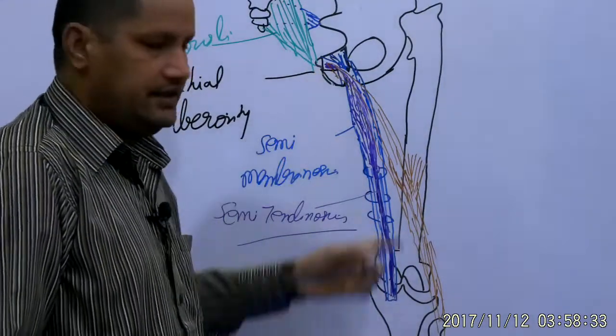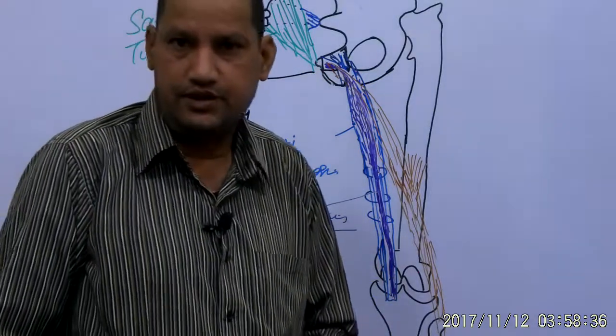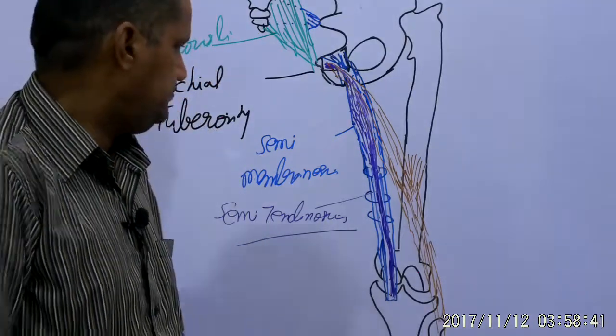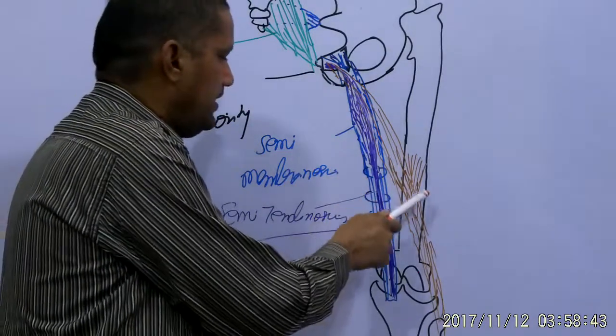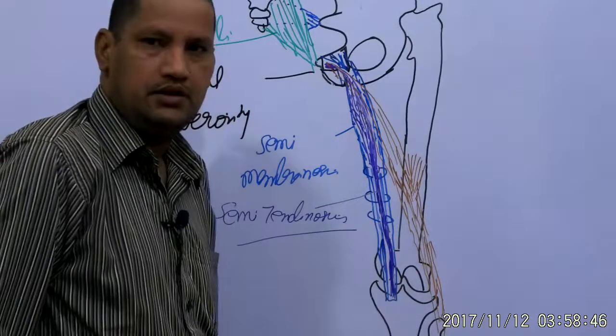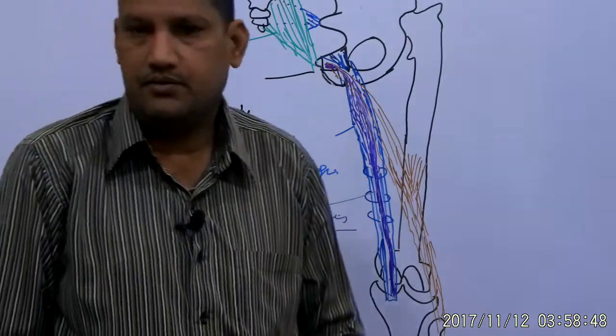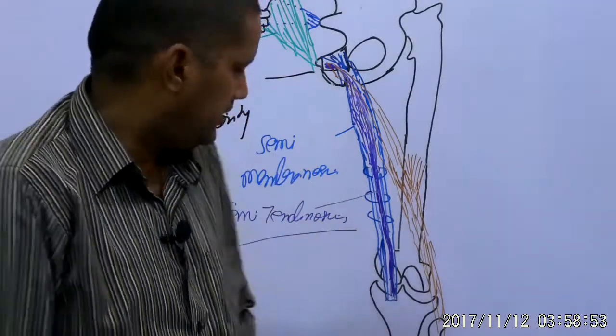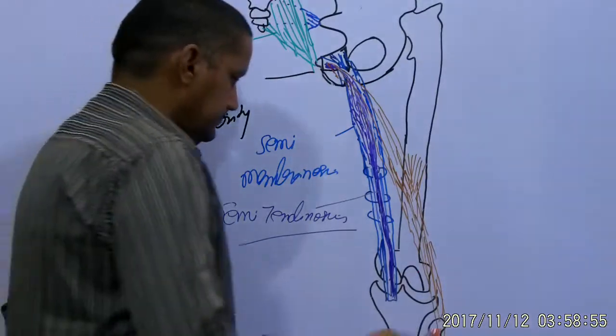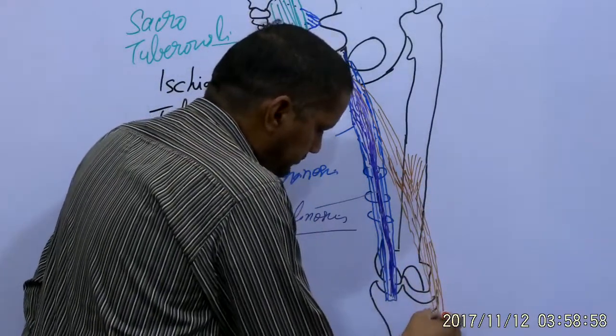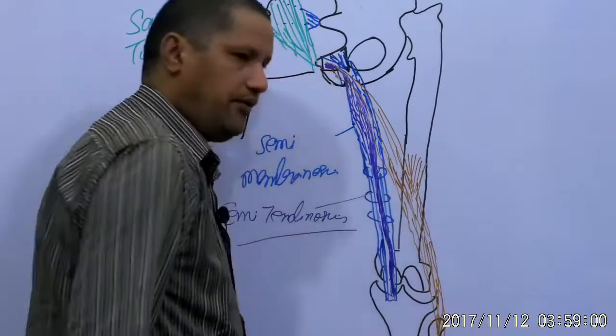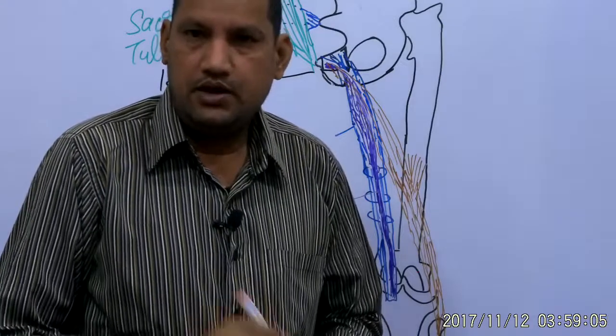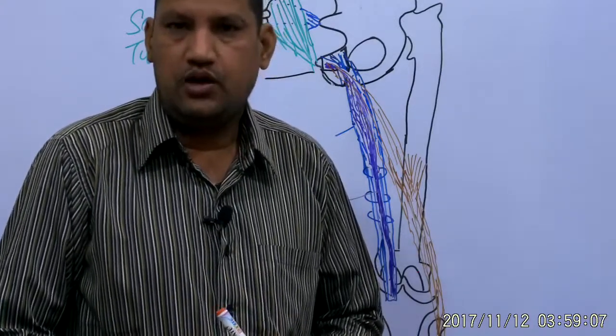The long head is arising from the ischial tuberosity with the semi tendinosis running downwards and laterally to join the short head of the biceps femoris which is arising from the femur. Inserted on the head of the fibula. Some fibers are also inserted on the crural fascia.